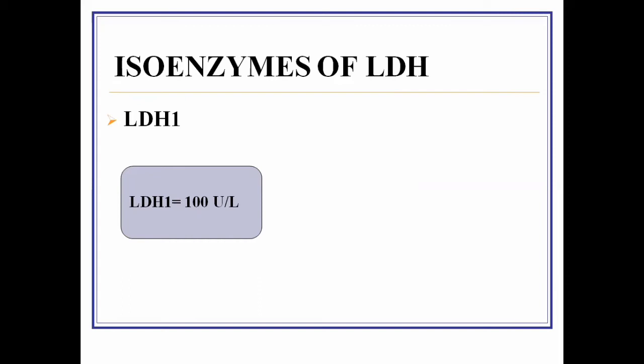An increased level of LDH1 in the blood indicates damage to heart cells or RBCs, and may indicate myocardial infarction. LDH1 is more specific for heart diseases. After the onset of myocardial infarction, LDH levels rise, reach a peak, and then after the 6th or 7th day tend to return to normal.